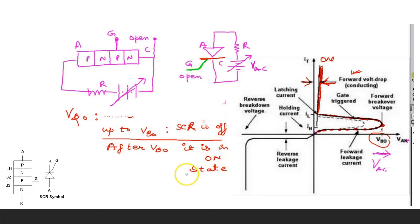Up to a certain voltage called the breakover voltage — in some cases called the VP voltage — your SCR remains off. When you cross this voltage, the SCR will go to the on state, as we have seen in the simple PNPN diode.